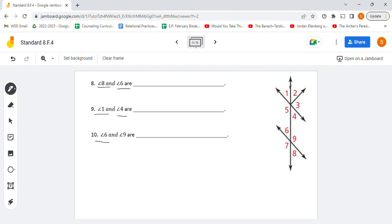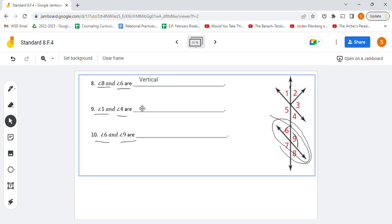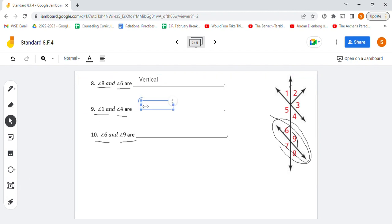And then 6 and 9. 6 and 9 are here and here. Those two form a straight line right there. So those would be supplementary. So let's write these three down. These two are vertical angles. These two are vertical angles again. And last, these two are supplementary.